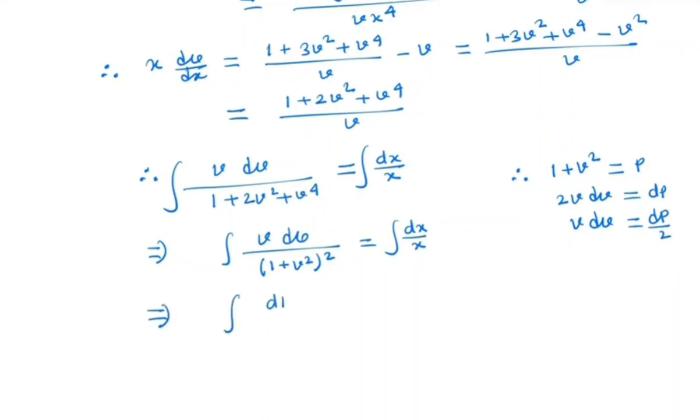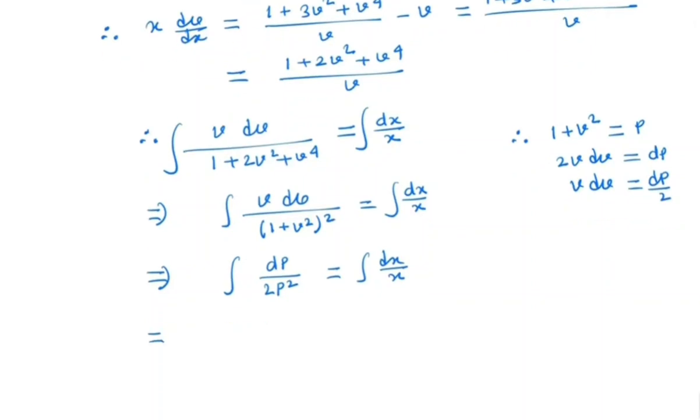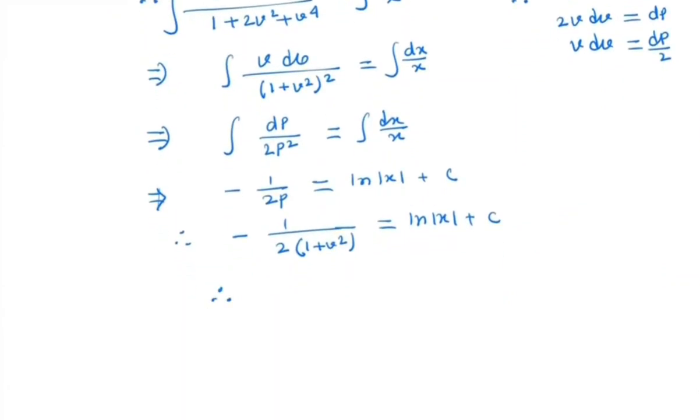So, here we have dp by 2p², which is nothing but integral dx by x. By integrating this, we get minus 1 by 2p equal to ln|x| plus C. And what is p? Minus 1 by 2 times 1 plus v² is ln|x| plus C. And by putting the value of v, we have minus 1 by 2(1 plus y²/x²) is ln|x| plus C, which is the general solution of this problem.